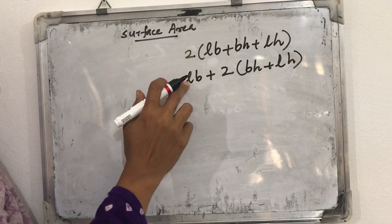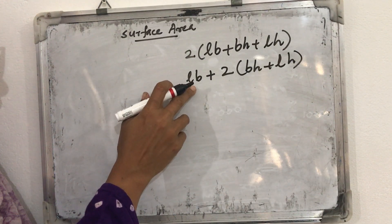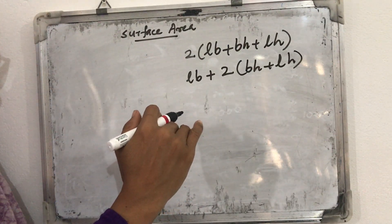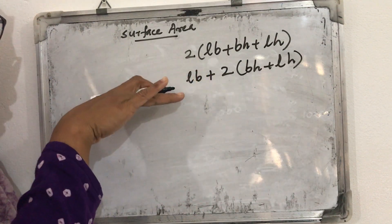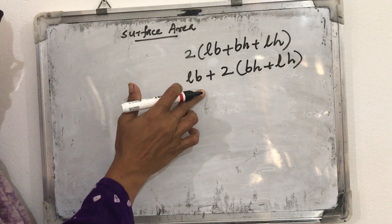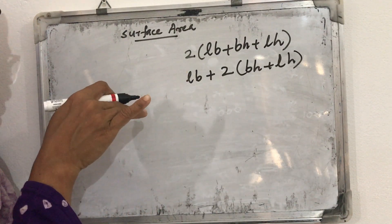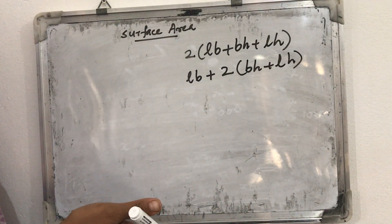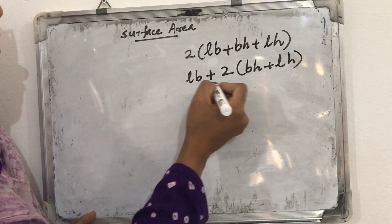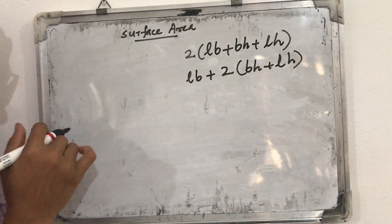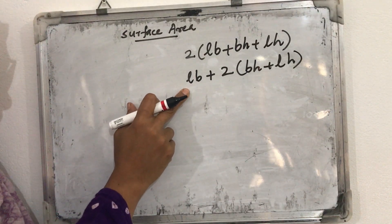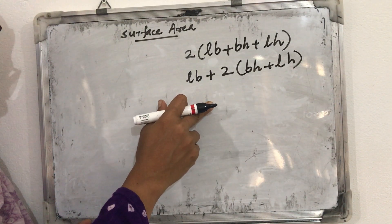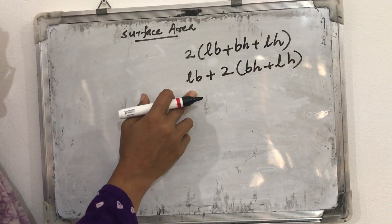For LB, we need not find one face, so we avoid the factor of 2 — only the top surface LB remains. Including top and bottom, we use 2LB, but since the bottom surface need not be painted, we avoid one LB, leaving only 1LB. Now substitute the values: L = 2 m, B = 1 m, H = 1.5 m, and substitute into the formula to get the answer.